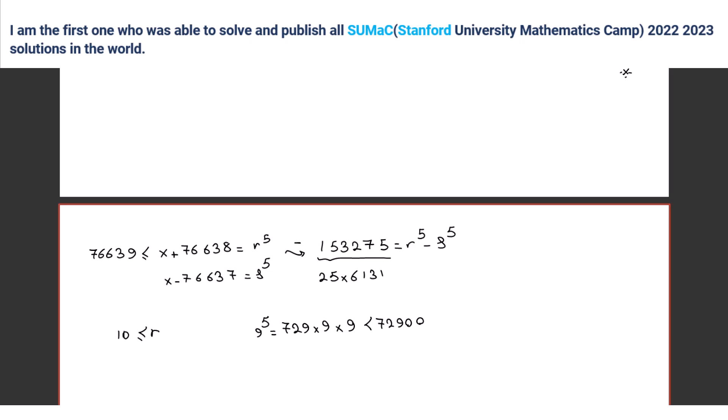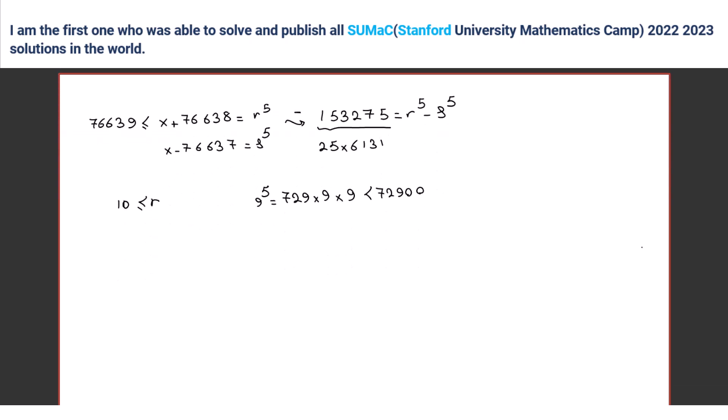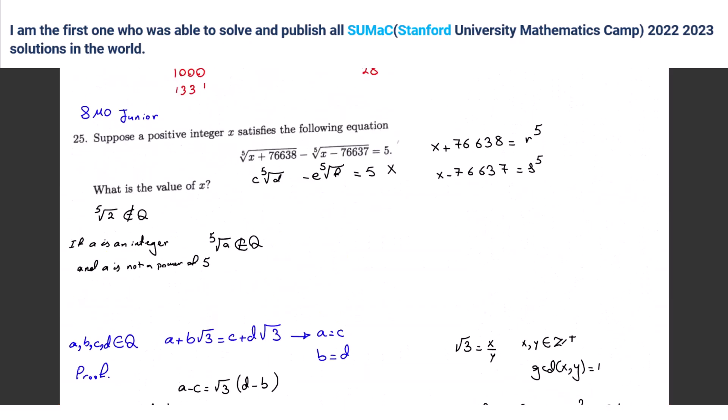R equals 11 and s equals 6. How did you find that? I just tested 11 to the fifth minus 153,265... and found it. Right, okay. One approach is we know the relationship between r and s: r equals s plus 5, exactly, from the subtraction.